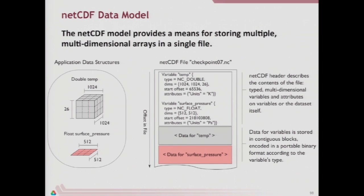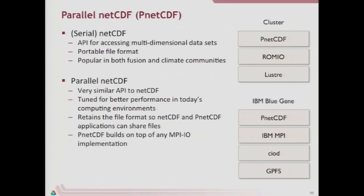Sometimes MPI-IO isn't as fast as it should be on certain machines, and these libraries may bypass it — but you won't have to worry about that. This data model is fairly simple: we get arrays and attributes, and the library figures out what goes where in the file. In NetCDF, you define a variable and it saves information near the front of the file, then points to where data starts later. We'll be using Parallel NetCDF specifically. On BlueGene, for example, NetCDF builds on top of IBM's MPI, which communicates with the CIOD infrastructure that interacts with the file system.